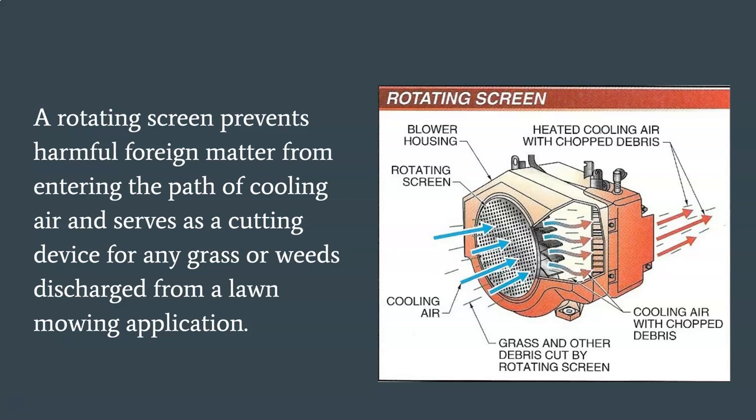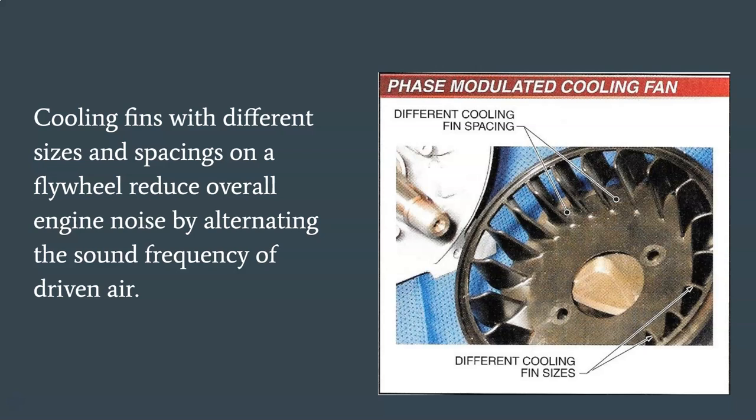A rotating screen prevents harmful foreign matter from entering the path of cooling air and serves as a cutting device for any grasses or weeds discharged from a lawn mowing application. Grass blown by the wind or discharged from a mower deck encounters the small holes in the rotating screen; if the grass passes through, it is chopped into smaller pieces. This reduces the size of debris, making it easier for cooling air to flow past the cooling fins of the engine.